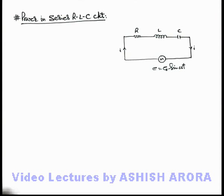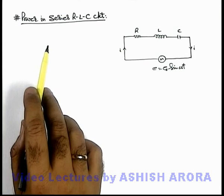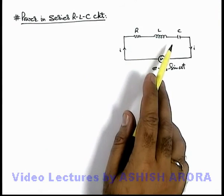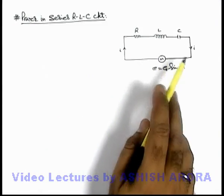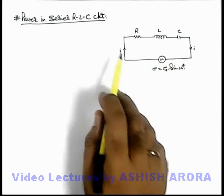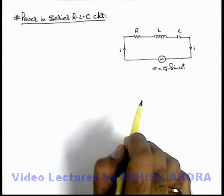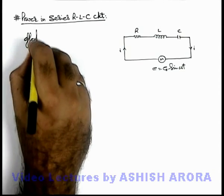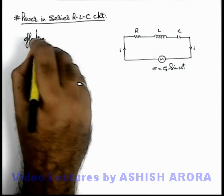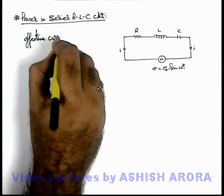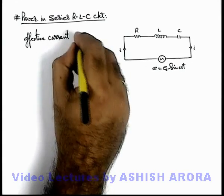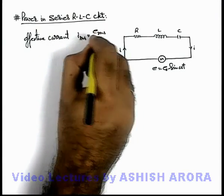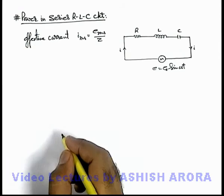Let us now discuss power in a series RLC circuit. Here we can see the 3 components are in series across an AC EMF, and an instantaneous current i is flowing. We can directly write the effective current in the circuit: I_rms is equal to E_rms divided by Z, where Z is the impedance of the circuit.